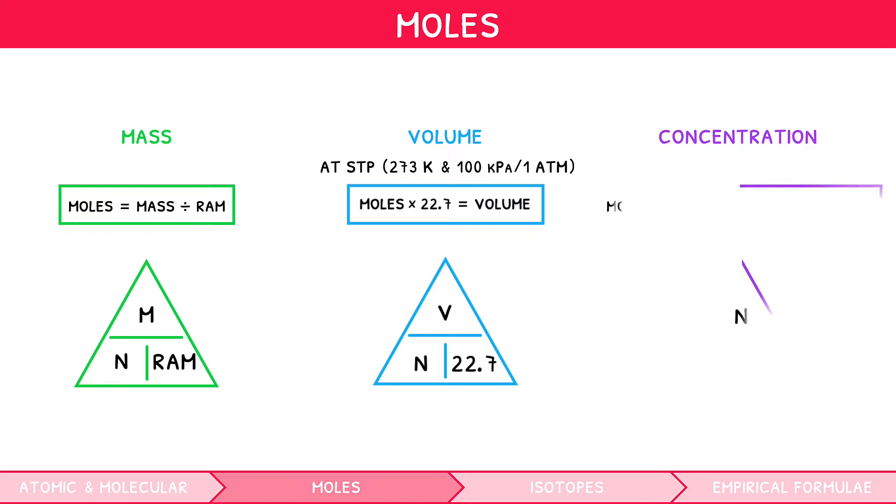The third formula is moles divided by volume equals concentration. During our videos, you may hear us refer to these triangles as mass divided by RAM equals moles, moles times 24, or 22.7, equals vols, and moles divided by vols equals conch. In this video, we will be focusing on the first of these formulas. The latter two will be covered in our successive video on volumes and concentration.